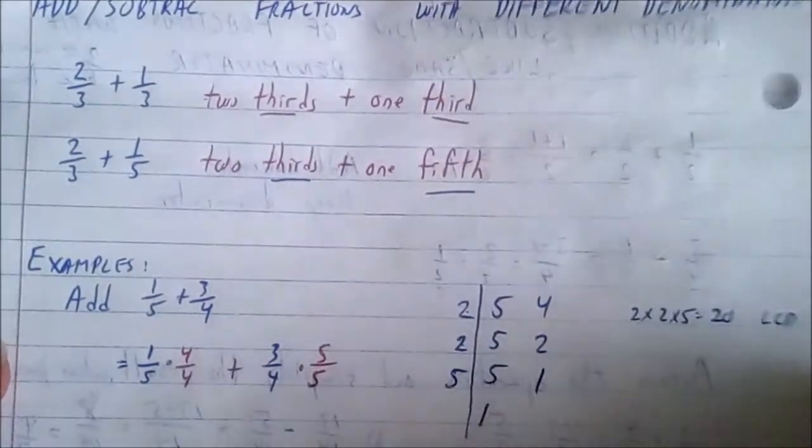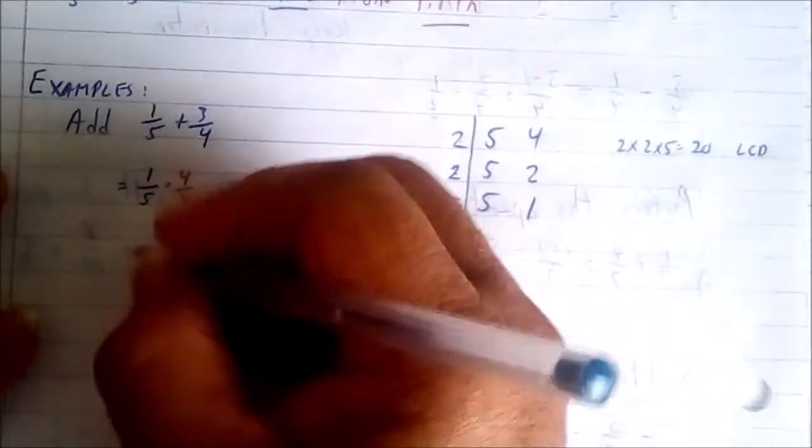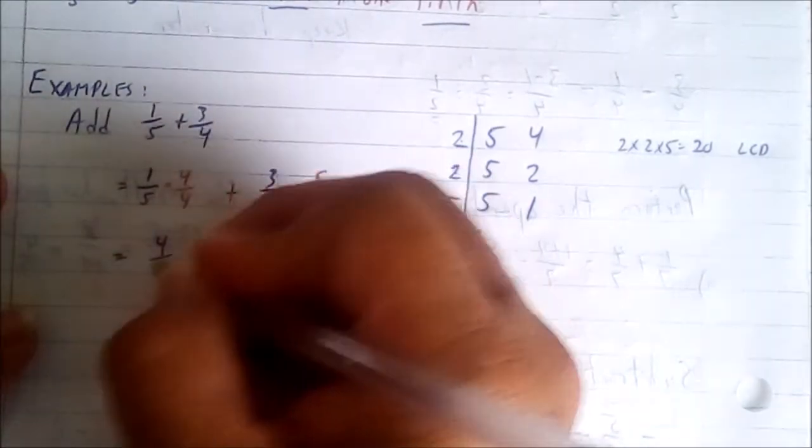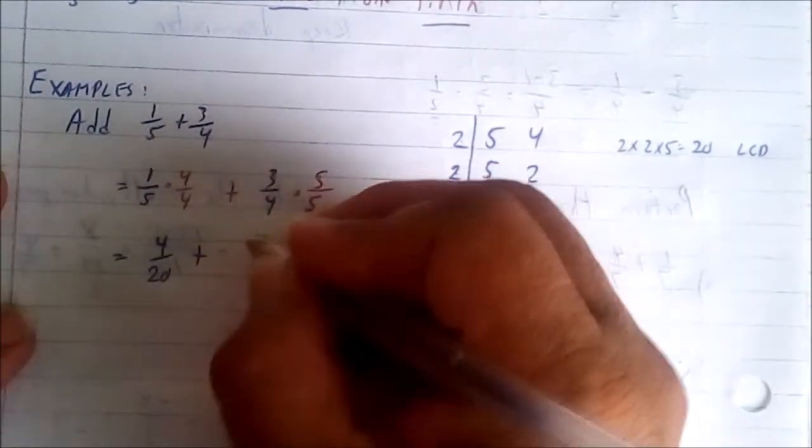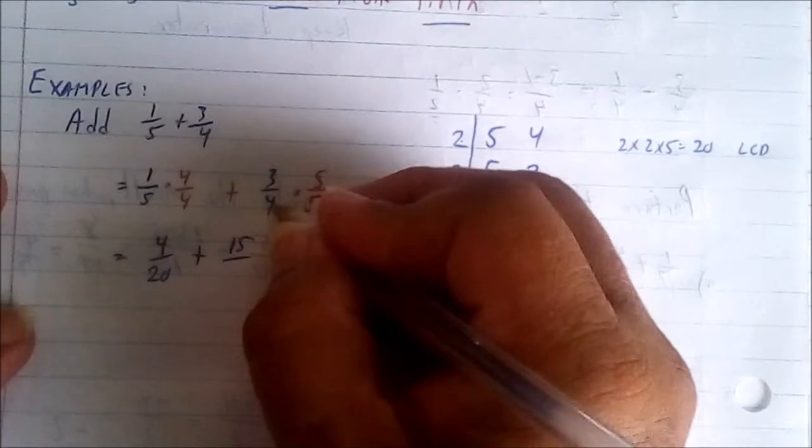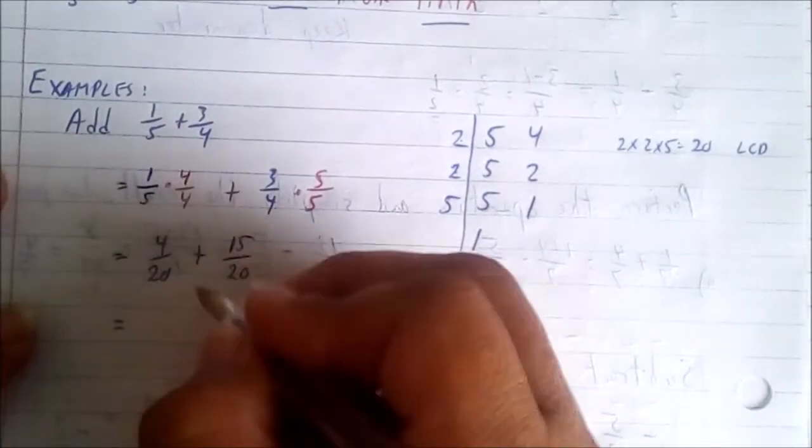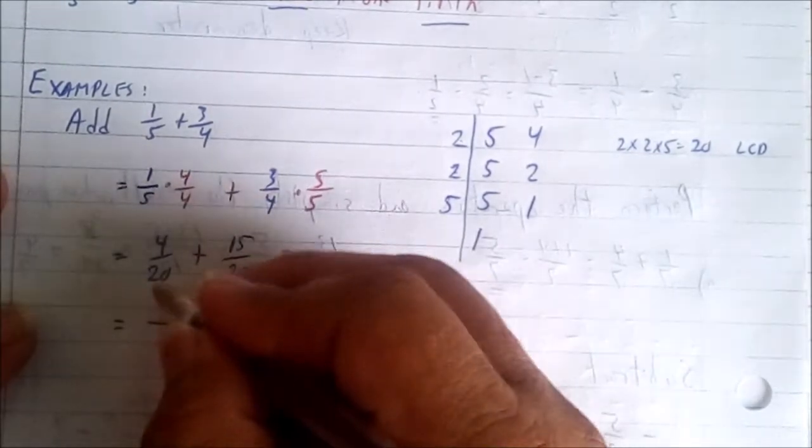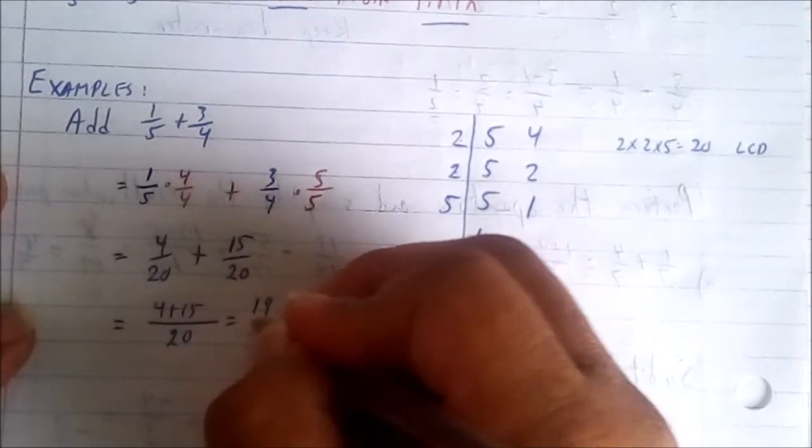Now we proceed to multiplication as we were doing before and we end up with one times four is four, five times four is twenty, plus three times five is fifteen, four times five is twenty. That now gives us like denominators, so we keep the denominator and we say four plus fifteen which is nineteen over twenty.